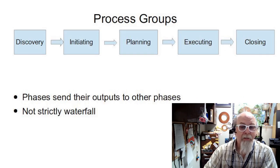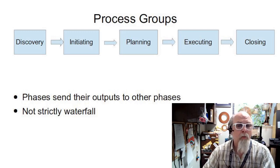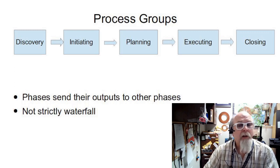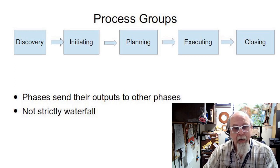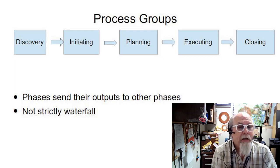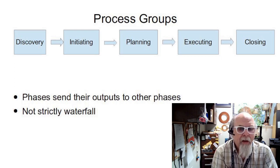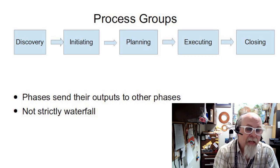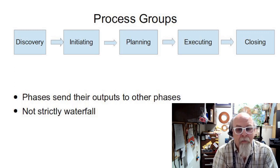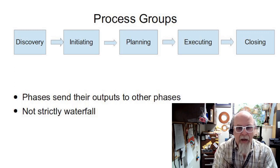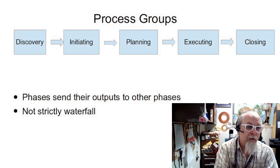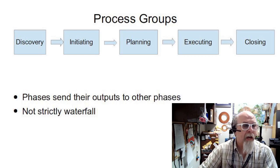When talking about processes, you'll often see a diagram like the waterfall diagram, where phase one — discovery — falls into, or waterfalls into, initiating, then planning, executing, and closing. But in real practice, sometimes you'll be in the initiating or even the planning phase and find that you didn't have a full understanding and may have to step back into a previous phase. So these phases aren't finished in the sense that you can't go back — sometimes you do. There could be arrows from planning back to initiating or initiating back to discovery, not included just to keep the diagram simple.